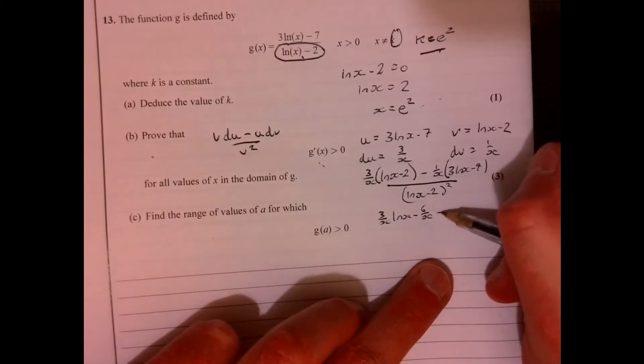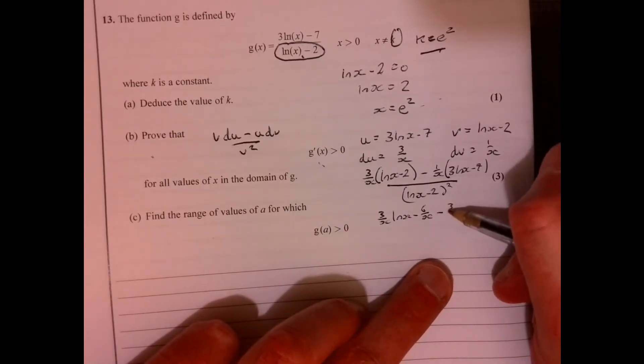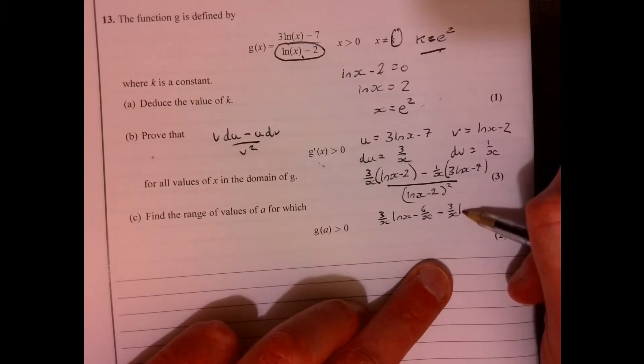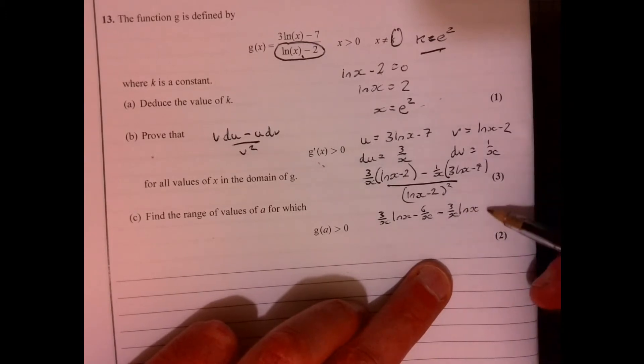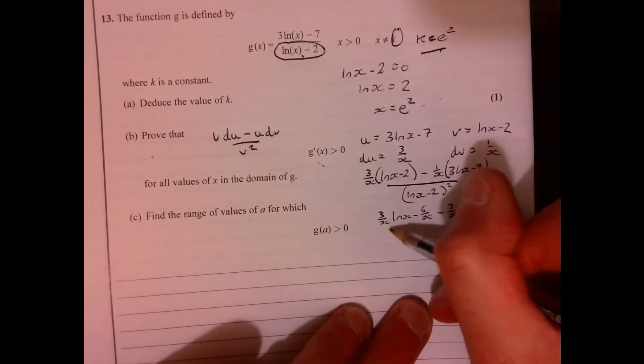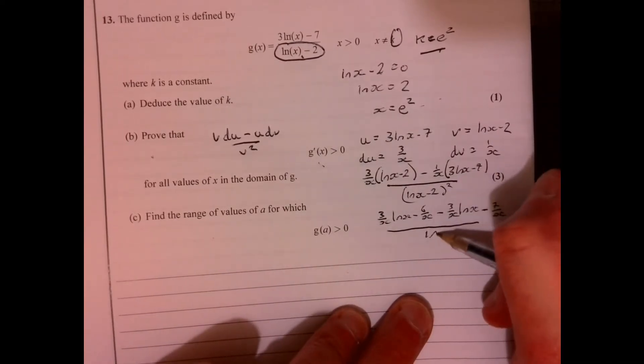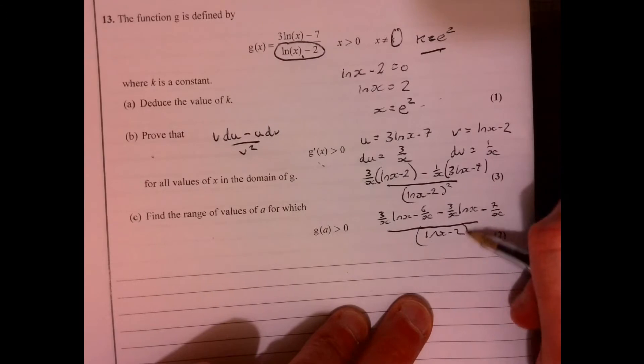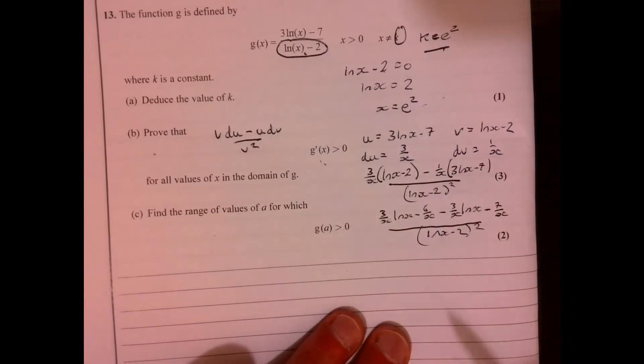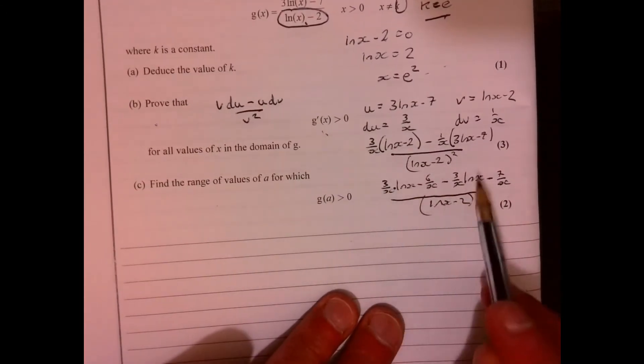Now, my initial thought on this question was like, oh no, where on earth is this going? But actually, the moment I wrote this bit down, I suddenly thought, this is a bit easier than I thought. So ln x minus 2 squared. Look at what happens to the numerator. Those two cancel, don't they?